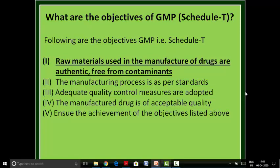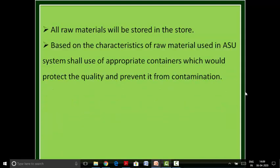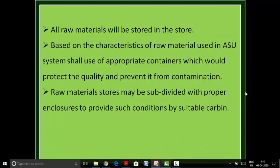First objective is that raw materials used in the manufacture of drugs are authentic and free from contaminants. All raw materials procured for manufacturing will be stored in the raw material store. The manufacturer, based on experience and the characteristics of the particular raw material used in ASU medicine, shall decide the use of an appropriate container to protect the quality of raw material and prevent damage due to dampness. If certain raw materials require controlled environmental conditions, the raw material store may be subdivided with proper enclosures and suitable cabinets.